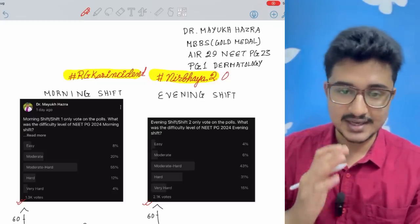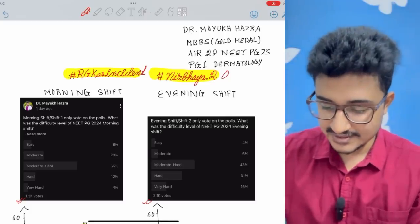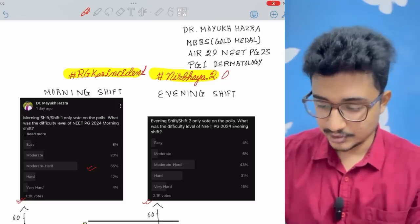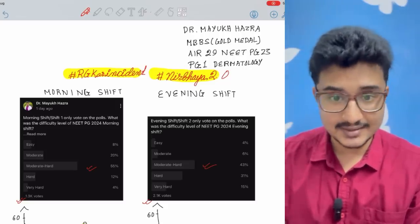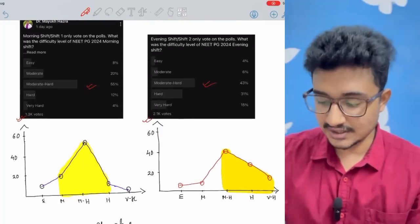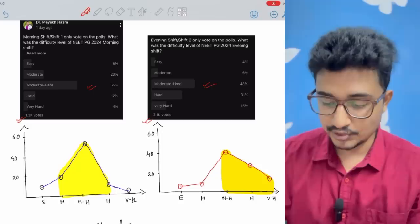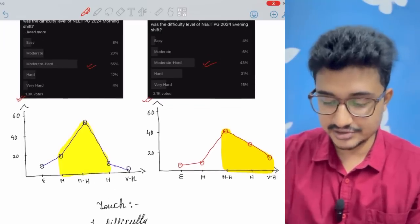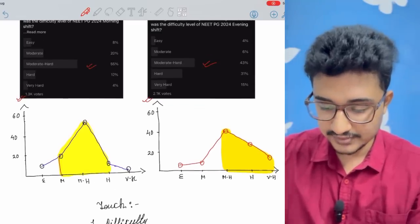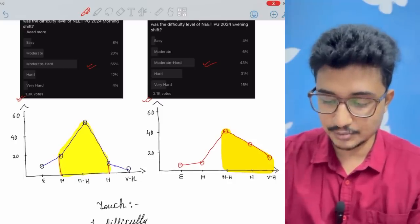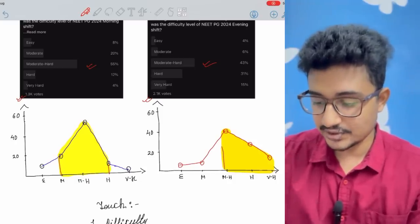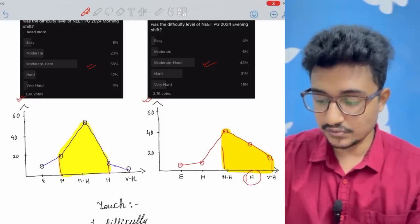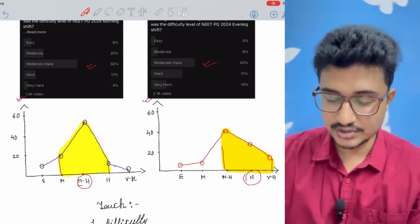Now you can see the maximum was voted for moderate to hard in both the morning shift and the evening shift but that doesn't show the picture. The graph shows the real picture. I have plotted this line diagram and this shows the real and actual picture that the morning shift was more in the moderate to hard range with the peak in moderate to hard but the evening shift was one step ahead that is in the moderate to hard to very hard range.